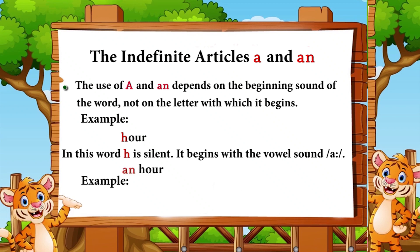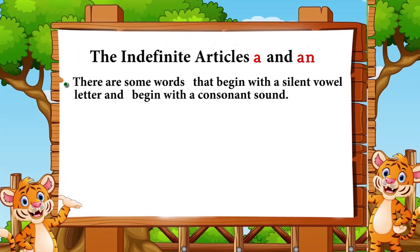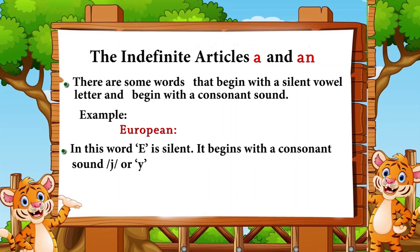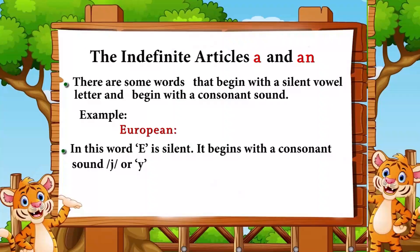Other examples with silent consonants: 'an air,' 'an honest.' On the other hand, there are some words that begin with a vowel letter but begin with a consonant sound. Example: 'European' — this word begins with the vowel letter 'e,' but 'e' is silent and it is pronounced 'European,' beginning with the consonant sound 'ye.' So we use 'a' before it: 'a European.'